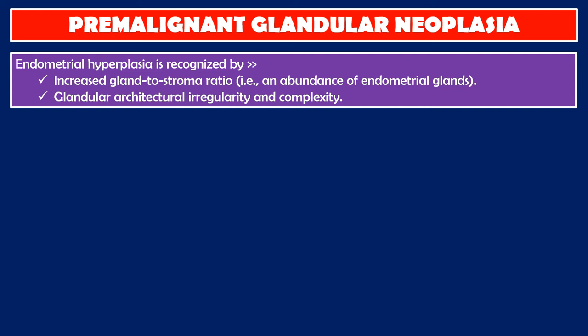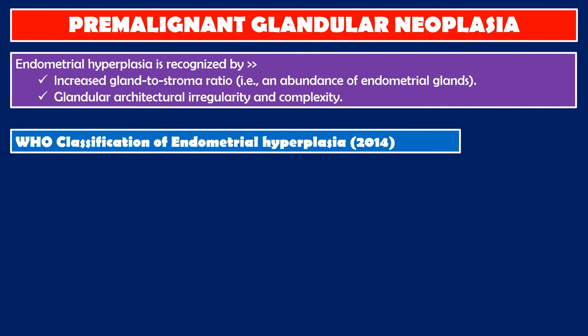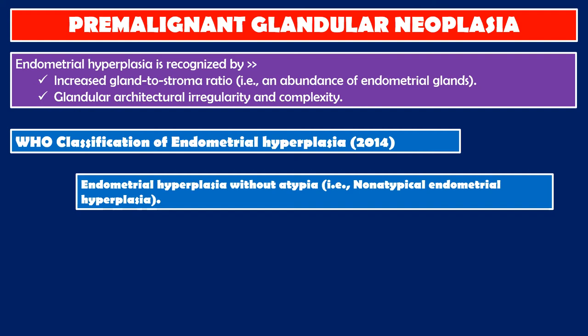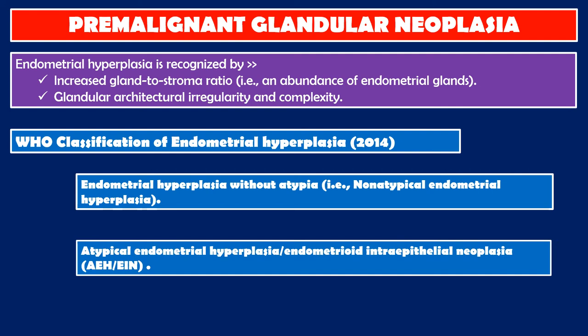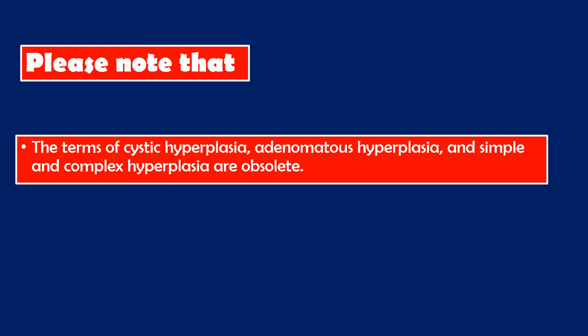WHO classification of endometrial hyperplasia 2014: endometrial hyperplasia without atypia, that is non-atypical endometrial hyperplasia, and atypical endometrial hyperplasia or endometrial intraepithelial neoplasia. Please note that the terms cystic hyperplasia, adenomatous hyperplasia, and simple and complex hyperplasia are now obsolete.